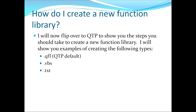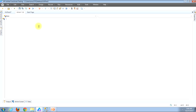This now moves us to the sixth topic: how do I create a new function library? I'll now flip over to QTP to show you the steps. I'll show you examples of creating a .qfl file, a .vbs file, and a .txt file. To begin creating a new function library in QTP, there are a couple of different ways to get started: the first is by using the menu bar, the second is by using the button bar. They both get you to the same window, so it could just be a personal preference.